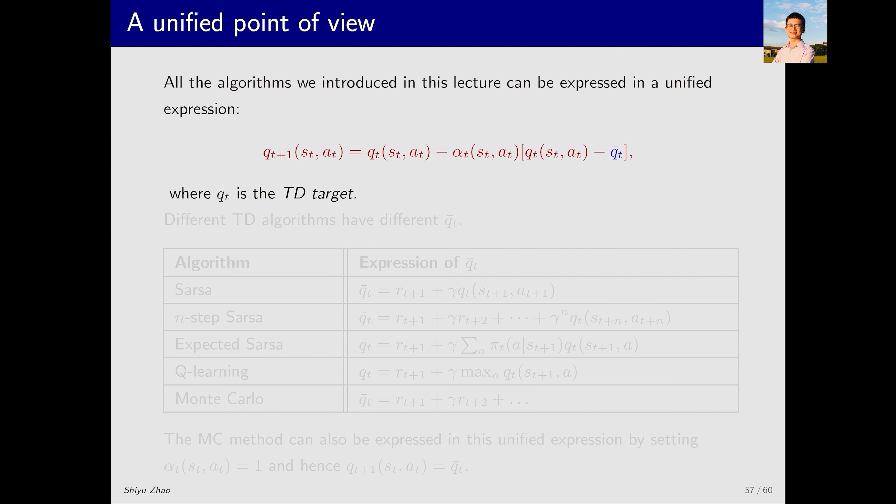First, all the TD algorithms we introduced can be expressed using this unified equation. Here, Q_T(s,a) is the estimated action value for the state action pair (s,a). The left side of the equation is Q_{T+1} which equals Q_T minus alpha_T times (Q_T(s,a) minus Q̄_T). The blue Q̄_T represents the TD target. The fundamental idea of TD learning is to make Q_T approach the TD target Q̄_T.